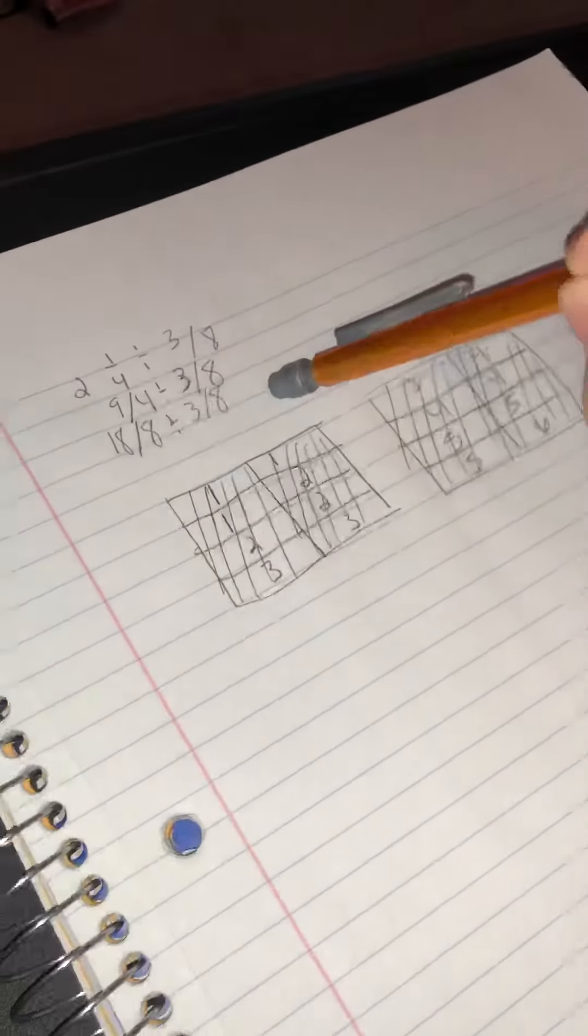And then 6, 6, 6. So we have, when we're taking away the 3/8 from the 18 over 8, we end up with 6 groups. So our answer is going to be 6.